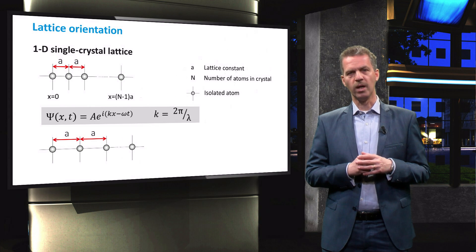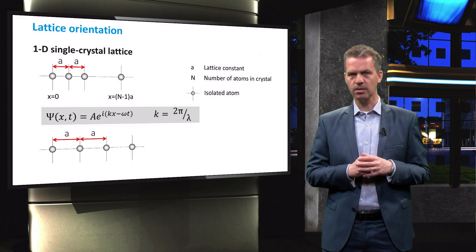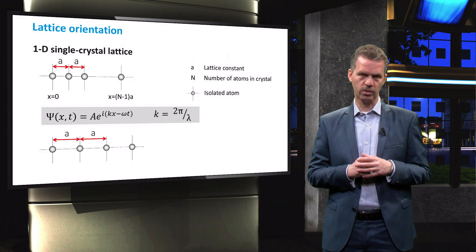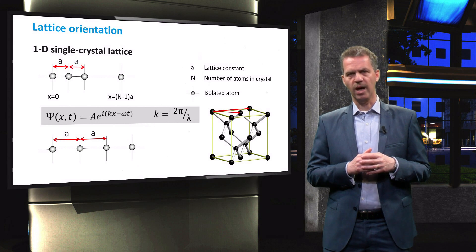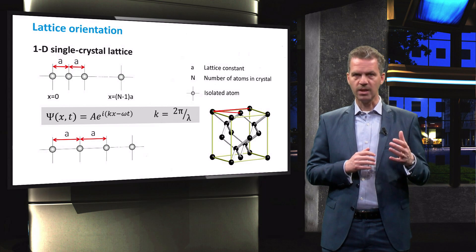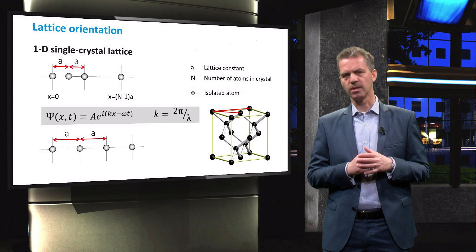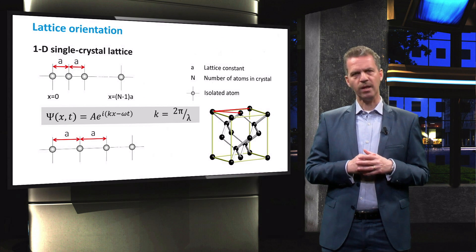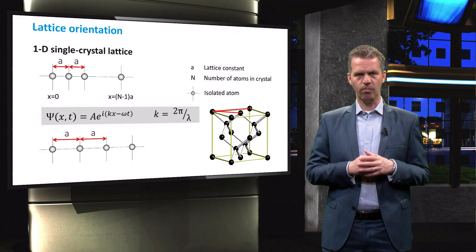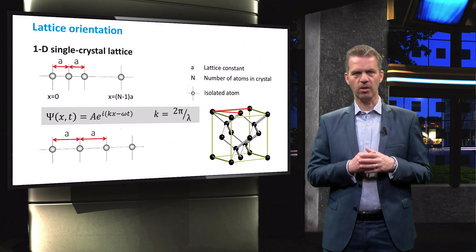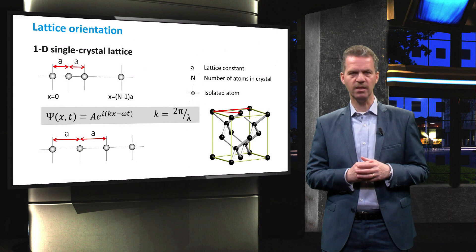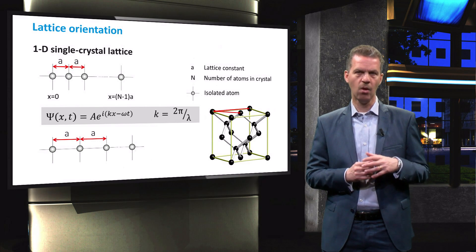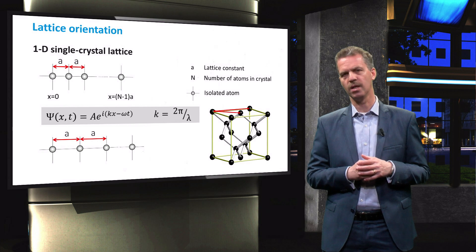The solution to the Schrödinger equation in three dimensions is beyond the scope of this course. But we can already see from the unit cell that different directions will give different atomic arrangements. As k is directly related to the energy of the plane wave, these different atomic arrangements will result in different available energy states for electrons in the lattice when considering the different orientations.